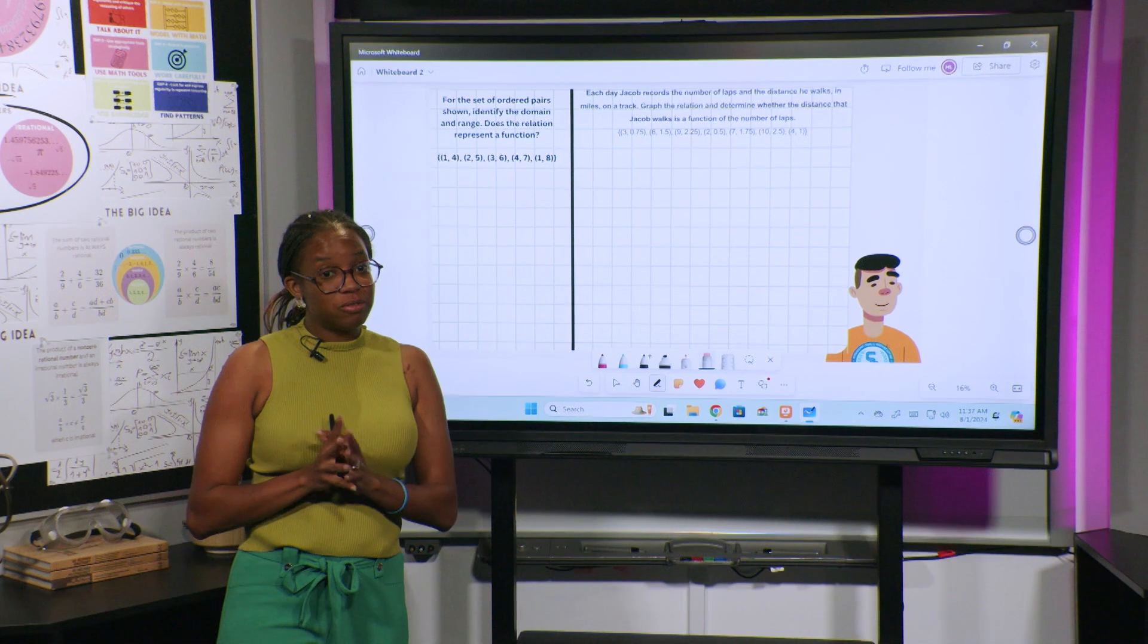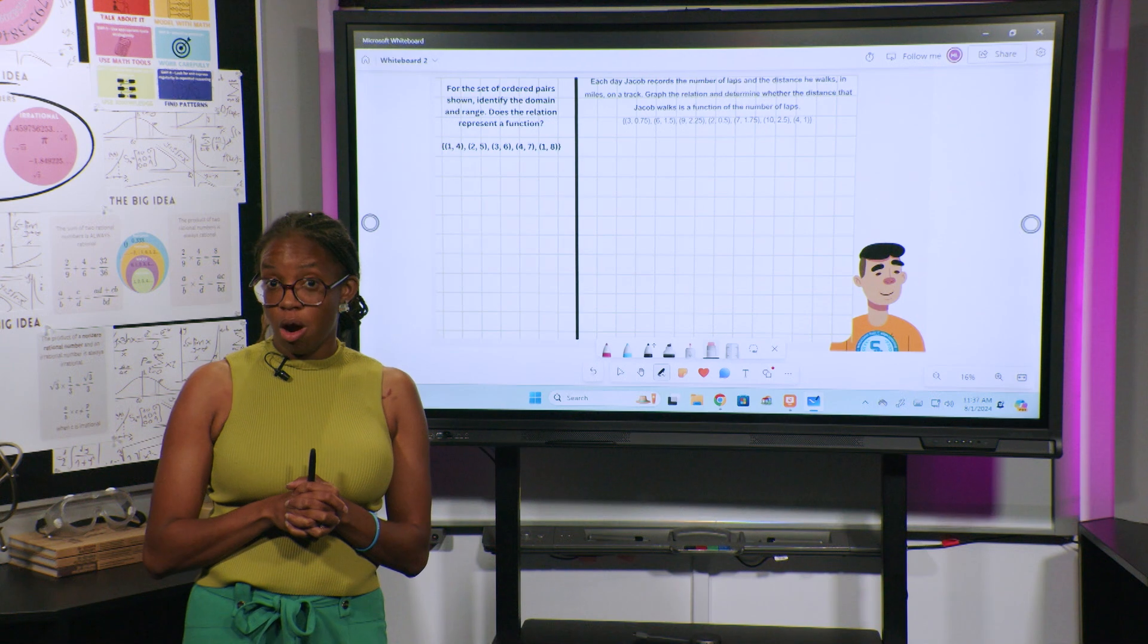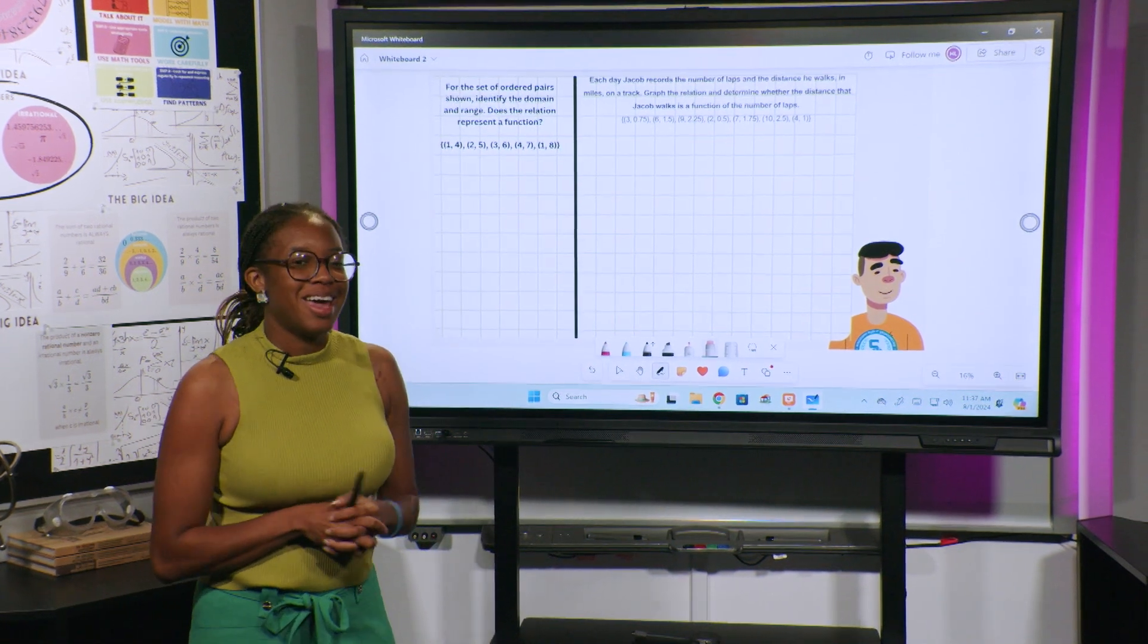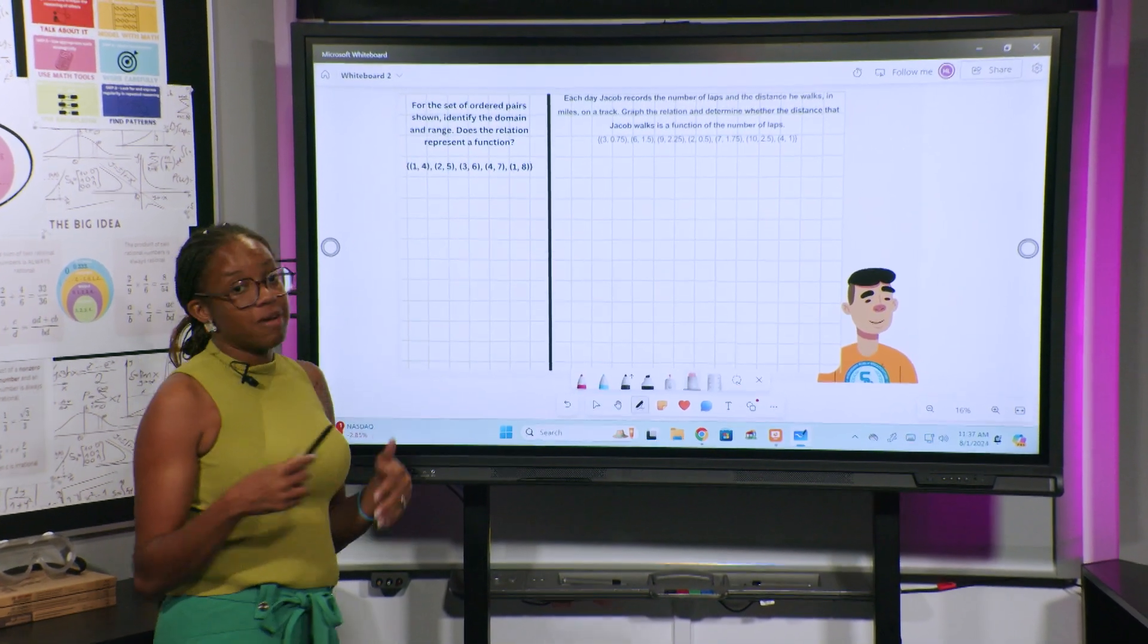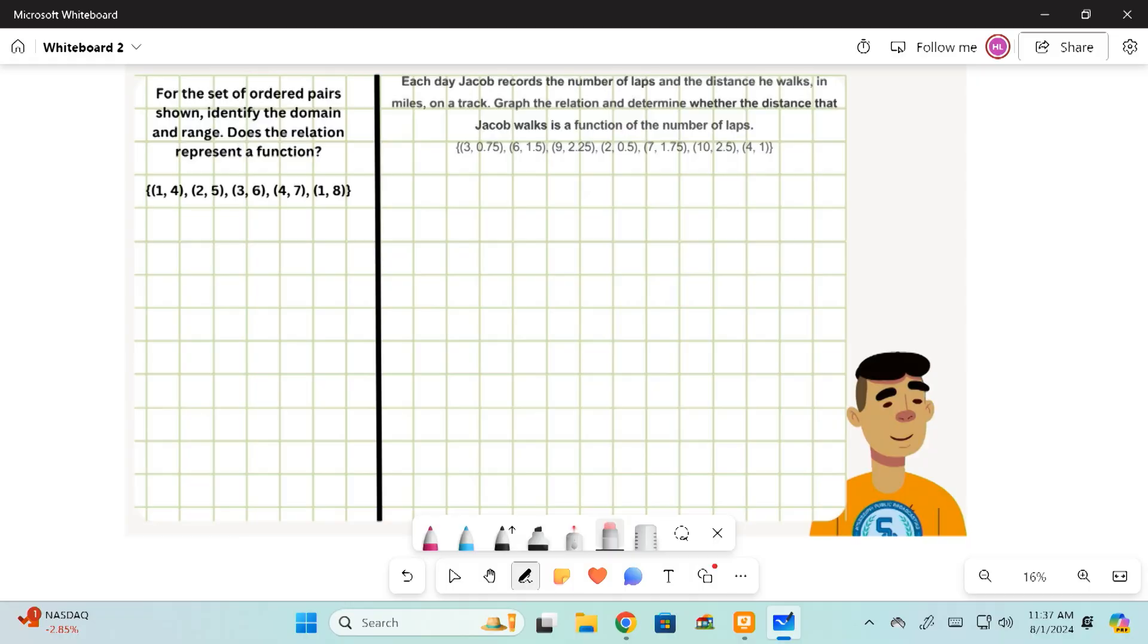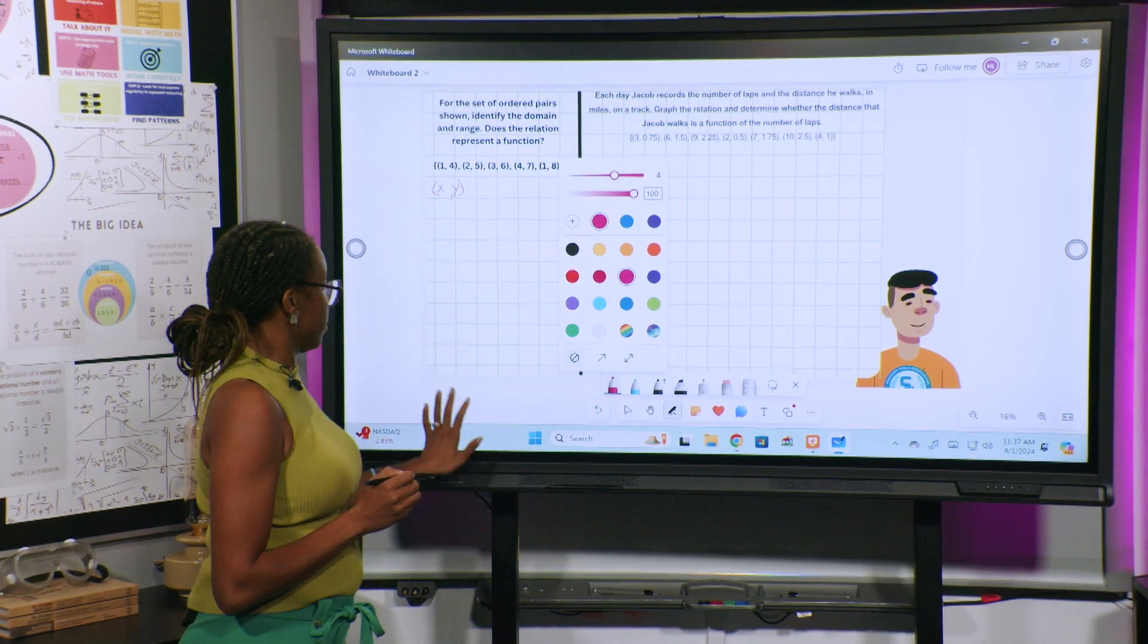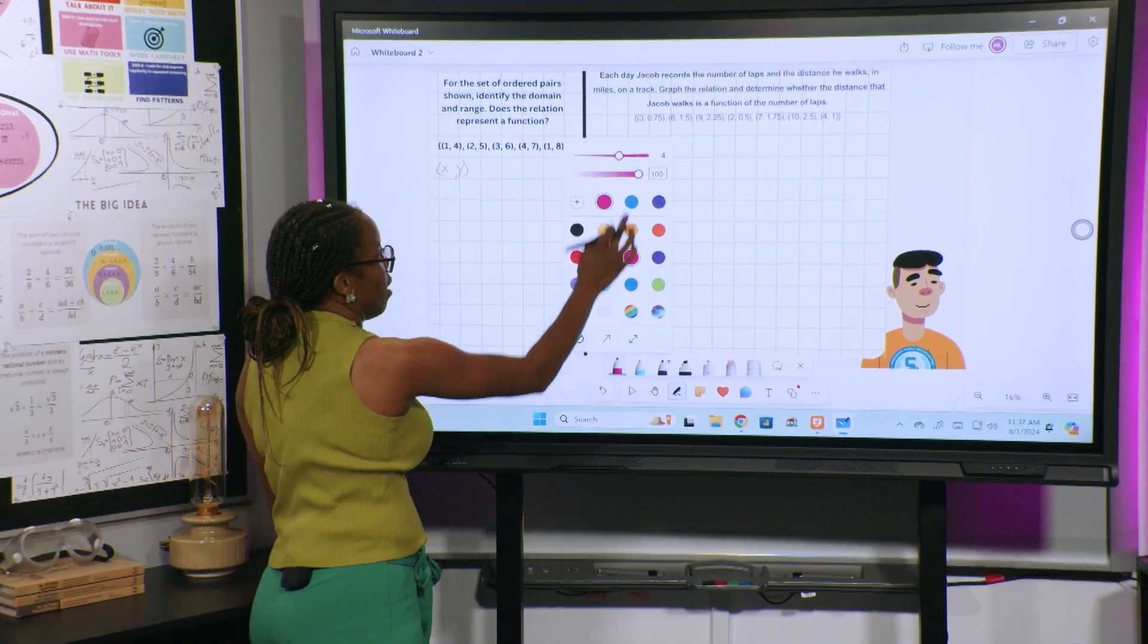All right, hopefully you've taken the time to write down your answers and shown your work, because mathematicians, which we are, always show our work and answer the questions. So for the first one, identify the domain and the range, and does this relation represent a function or not? So I have all ordered pairs. I know that ordered pairs are written as (x,y). So I know how I can write out all my x's and all my y's.